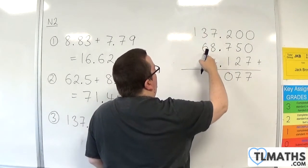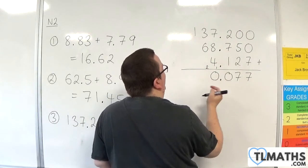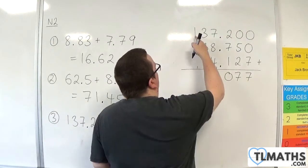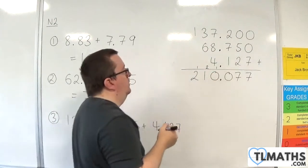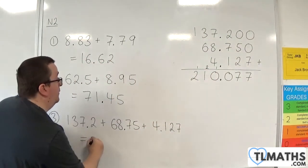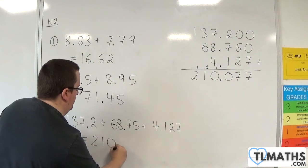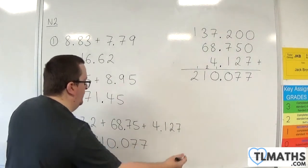3 plus 6 is 9, plus the 2 is 11. So, put down the 1, carry the 1. 1 plus 1 is 2. So, we're ending up with 210.077.